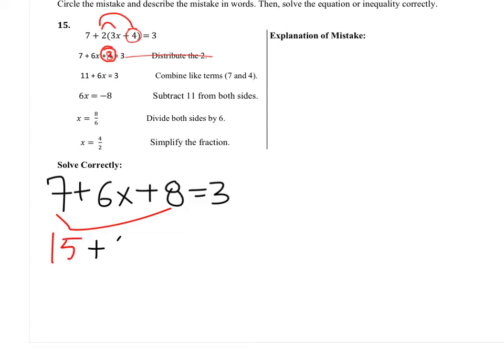We didn't touch the 6x because there were no common terms or like terms there. Then we would subtract 15. So, we get 6x equals negative 12.